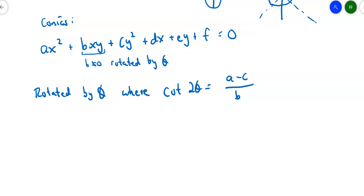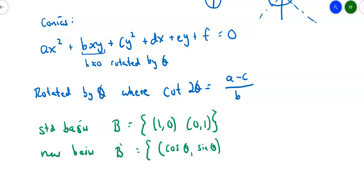We're going to achieve this by changing our bases. The standard basis for this conic would be ij, right? So the standard basis would be (1,0) and (0,1). Our new basis is going to have the basis vectors (cos θ, sin θ). That comes from the unit circle.